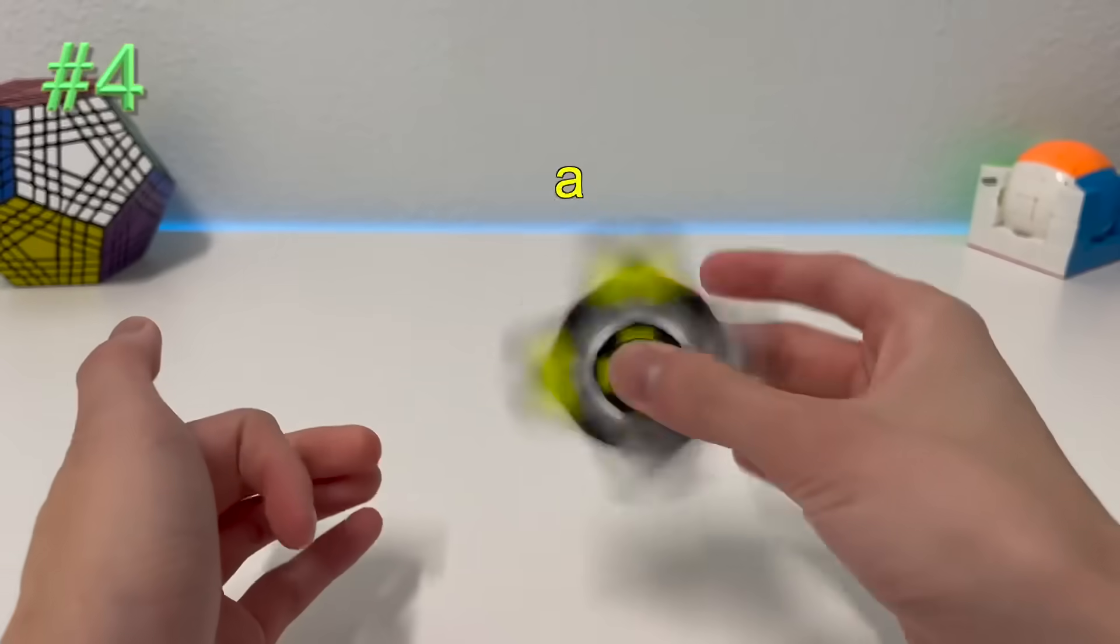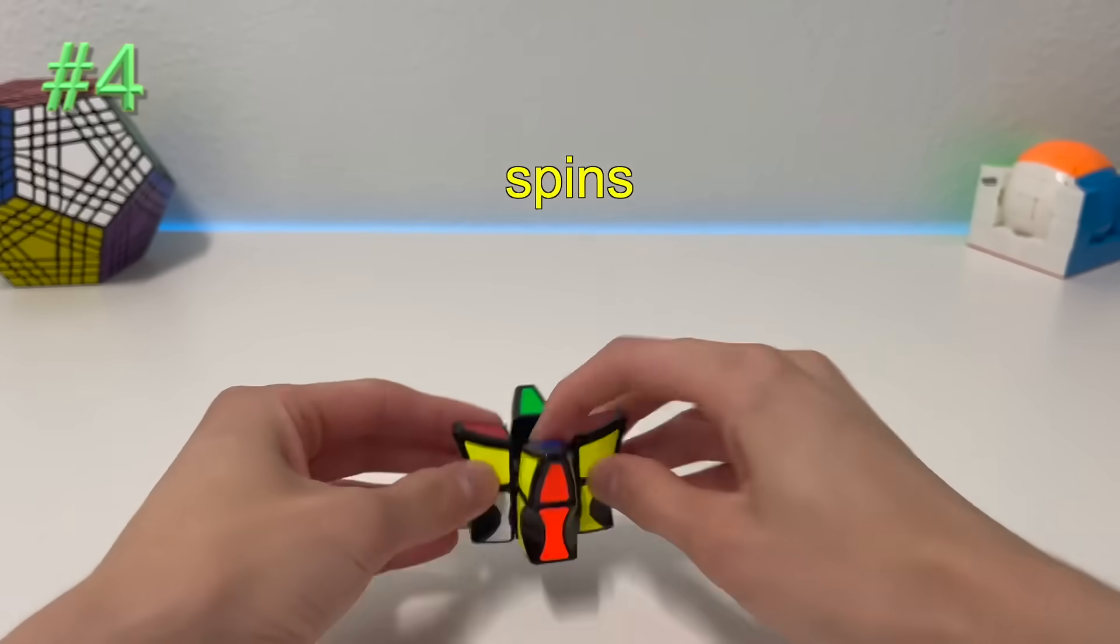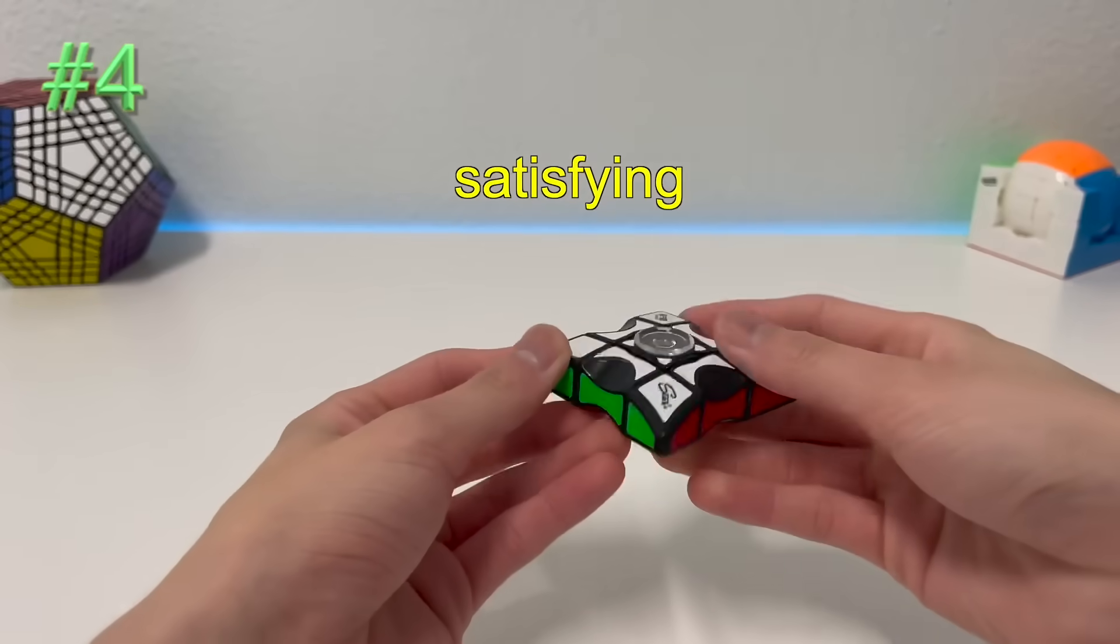Number four, the fidget spinner. It's a nice challenge figuring out when you just start off cubing. It spins in weird ways as well, and is satisfying when you complete it.